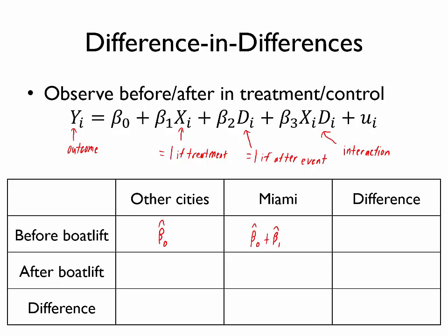We could continue on making these predictions. I would encourage you to check my math here. But we're just going to keep plugging in ones and zeros appropriately. And we should arrive at a series of predicted wages in these four different scenarios.